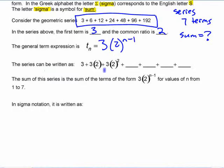So the series can be written as three, three times two, three times two squared, three times two to the third, and so on. Three times two to the fourth, three times two to the fifth. Except I missed one. Fifth, sixth. Okay, the last one, the seventh term is three times two to the sixth. So the sum of this series is the sum of terms with that general formula for values of n from one to seven.